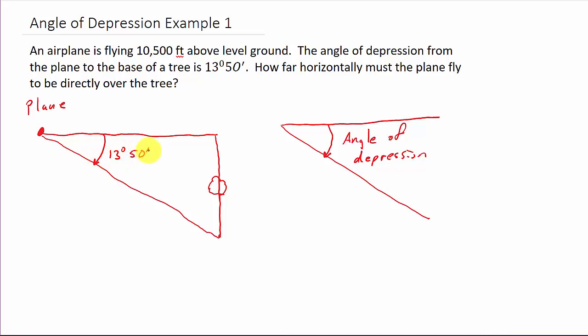And it says it's flying 10,500 feet above level ground. So that means the distance from here to here is 10,500 feet. And we want to know how far do we need to fly horizontally to be directly over the tree. So we need this distance here, X.